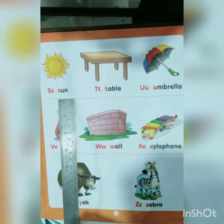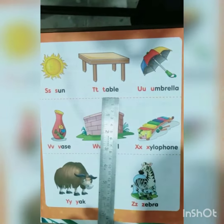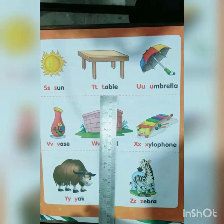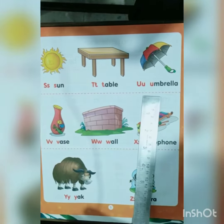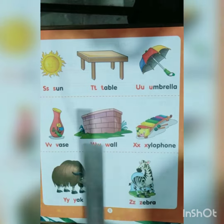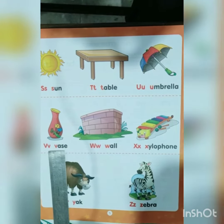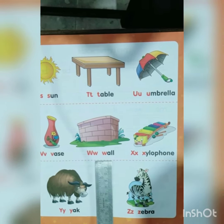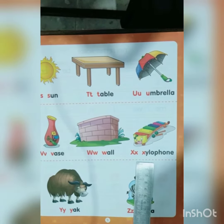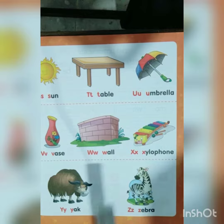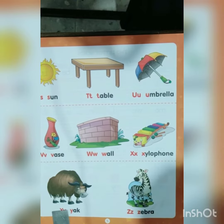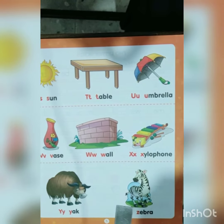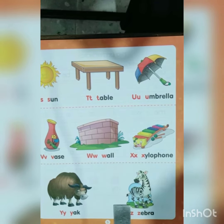S for Sun, T for Table, U for Umbrella, V for Vase, W for Wall, X for Xylophone, Y for Yag, Z for Zebra.